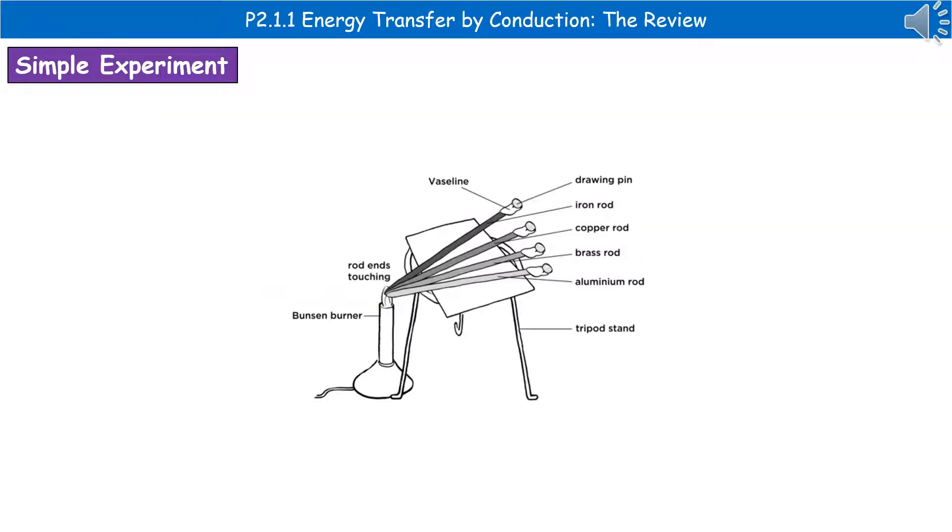One way you could carry out an experiment in class to investigate this is shown in the diagram. You would have a range of different material rods, and you'd stick a drawing pin or paper clip onto the end with a bit of Vaseline. You then heat the opposite end of the rod with a Bunsen burner and time how long it takes for the pin to fall off. The rod that falls off first is the best conductor, and the one that falls off last is the best insulator.